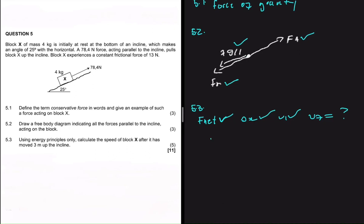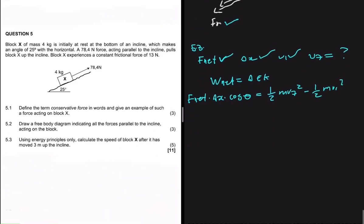We can say that the work of net is equal to the change in kinetic energy. But then we know that to find work of net we can also say f_net multiplied by delta x multiplied by cos of theta equals a half m v_f squared minus a half m v_i squared.